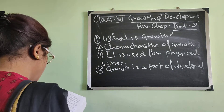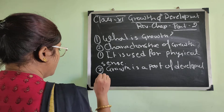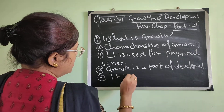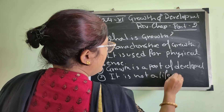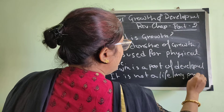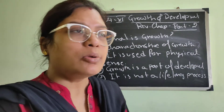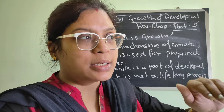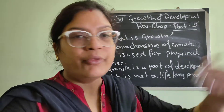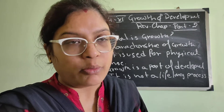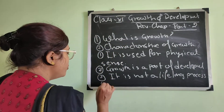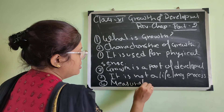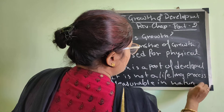Number three, growth is not a lifelong process. For example, height is a type of growth, but a person cannot keep increasing in height until death. There is a fixed stage up to which height increases; after that, the individual will not grow any taller. Number four, growth is always measurable.